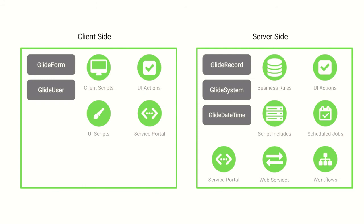As for the APIs specifically: on the client-side we will be using APIs like Glide Form and Glide User, usable in Client Scripts, UI Actions, UI Scripts, and Service Portal. On the server-side we have APIs like Glide Record, Glide System, and Glide DateTime, usable in Business Rules, UI Actions, Script Includes, Scheduled Jobs, Service Portal, web services, and Workflows.